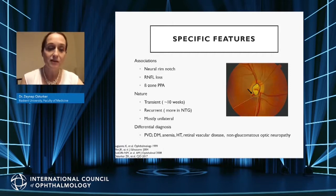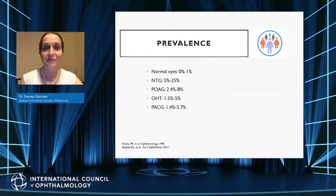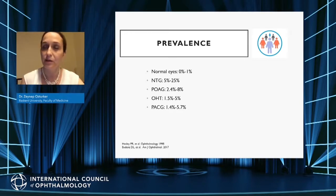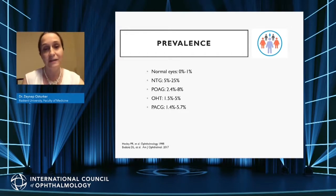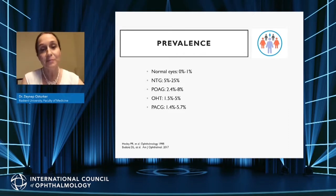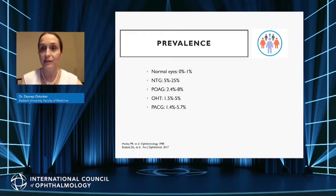Glaucoma-specific features of disc hemorrhages include frequent development on the edge of a rim notch, and nerve fiber layer loss can be detected in the corresponding sector. Beta-zone parapapillary atrophy has also been related to disc hemorrhages in several studies. Although hemorrhages may persist for several weeks, their transient nature makes them difficult to catch. They may be recurrent, with more frequent recurrences in normal tension glaucoma, and most are unilateral though bilateral development is also most common in normal tension glaucoma.